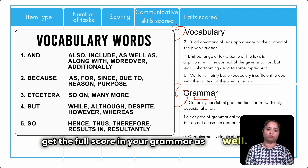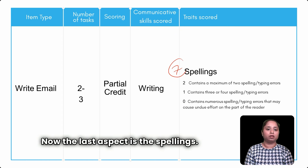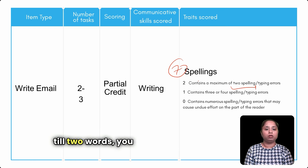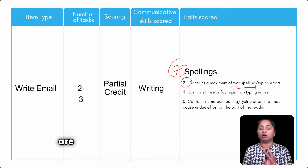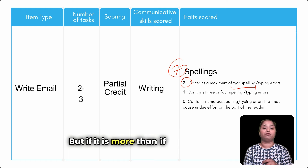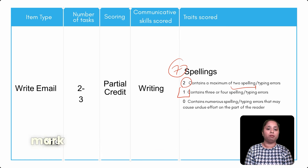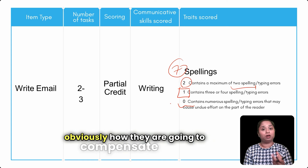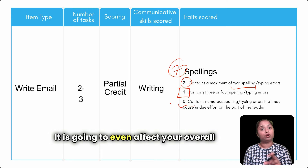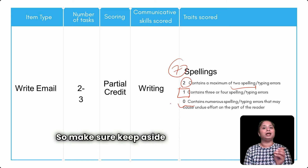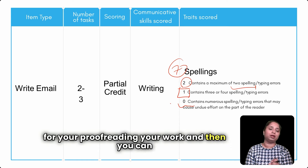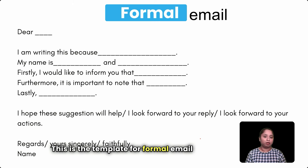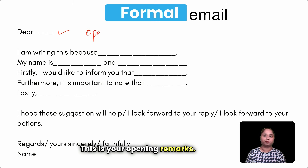The last aspect is spellings. If you make up to two spelling or typing errors, you will still get full marks. If you make three or four spelling mistakes, you get only one mark, and zero if there are numerous mistakes. It will also affect your overall writing score. Make sure you keep one or two minutes aside for proofreading to easily get good scores in email writing.